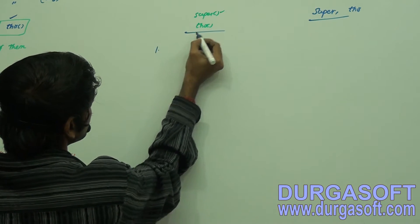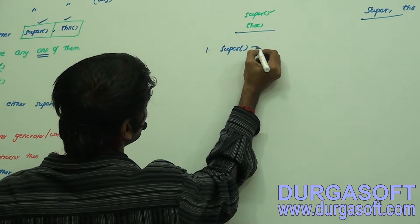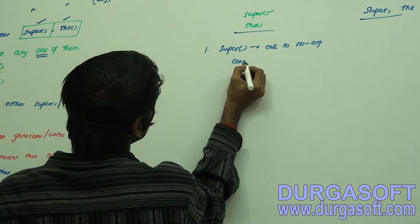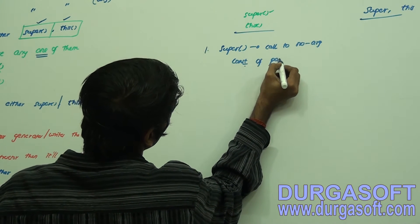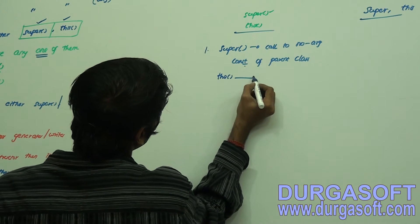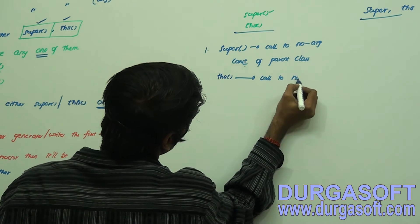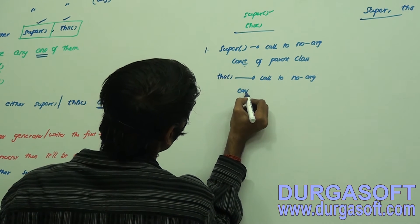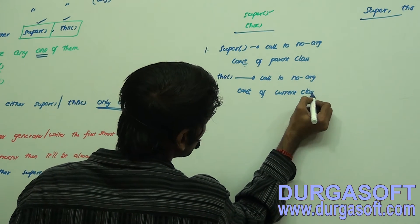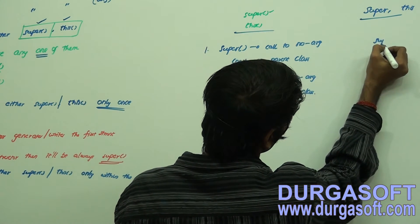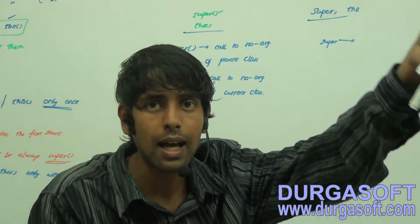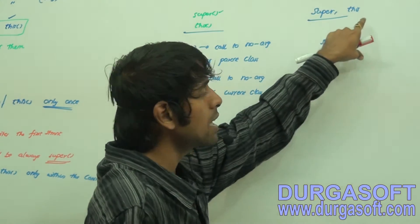Super() is meant for calling the no-argument constructor of the parent class. This() is meant for calling the no-argument constructor of the current class. Super as a keyword is meant to refer to static and instance members of the super class — this is very important.